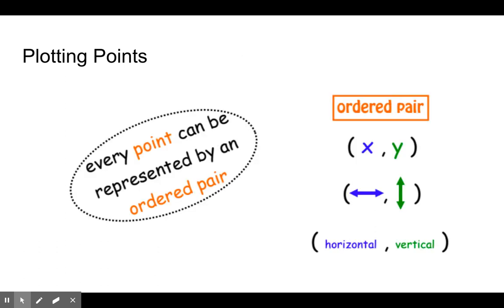Ordered pairs are representations of points. Every point can be represented by an x and a y. The first number is x, or the left and right direction, or horizontal. The second number is y, which is up and down, or vertical.